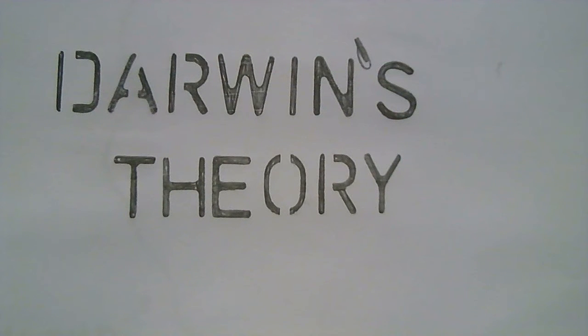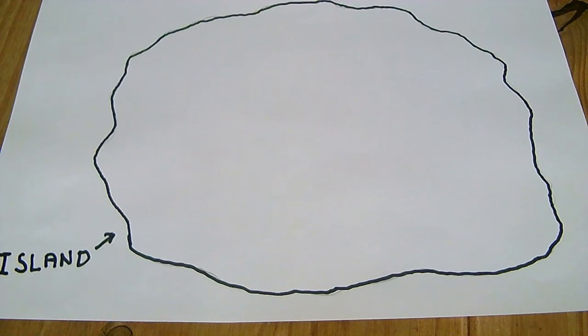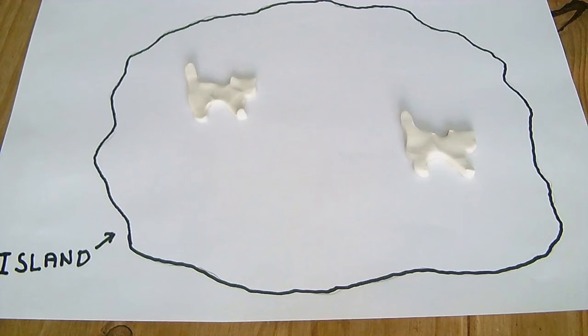So let's take a look at Darwin's theory of evolution. We begin with an island which is inhabited by predominantly white plants. On the island are also cats.